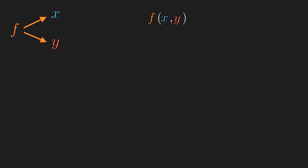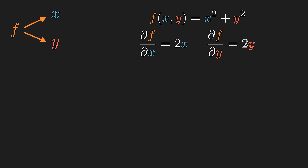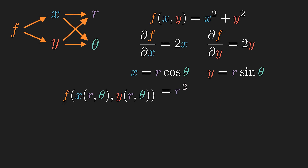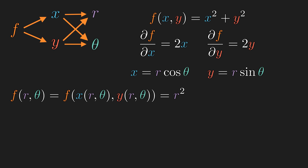Let f be a function of two variables x and y, defined by x² + y². The partial derivative with respect to each variable is 2x and 2y respectively. Suppose we want to do some calculus in a different coordinate system — say, polar coordinates. We can think of x and y each as a function of r and theta given by the standard formula. If we plug in r and theta into x and y, we get r². This new function technically is a different function than f. So if you're being a formalist, you would give it a different label, say g. But from an applied perspective, they are practically the same function, just different coordinate descriptions for the input.